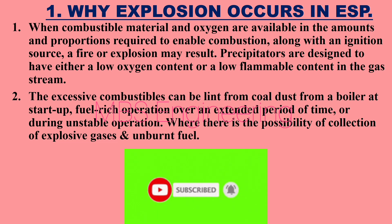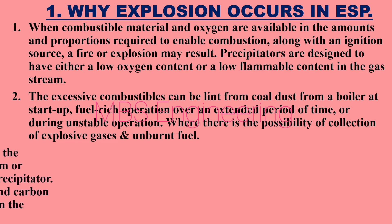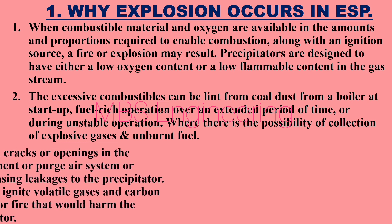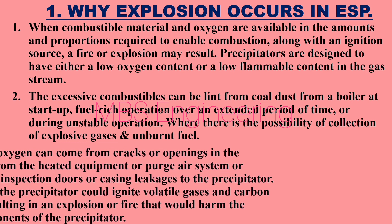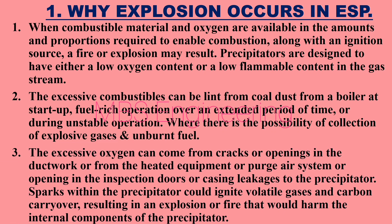Excessive combustibles can also arise during unstable operation, where there is the possibility of collection of explosive gases and unburnt fuel. Point 3: Excessive oxygen can come from cracks or openings in the ductwork, from heated equipment, the purge air system, or leakages in the inspection doors or casing. Sparks within the precipitator could ignite volatile gases and carbon carryover, resulting in an explosion or fire that would harm the internal components of the precipitator.